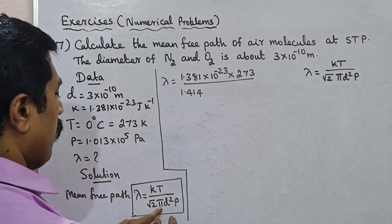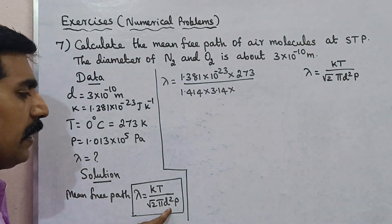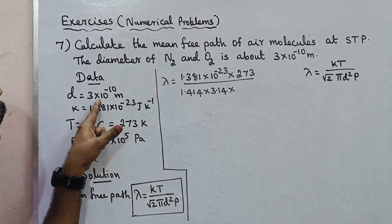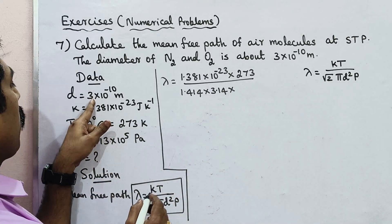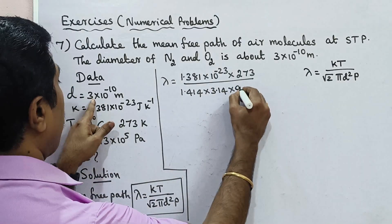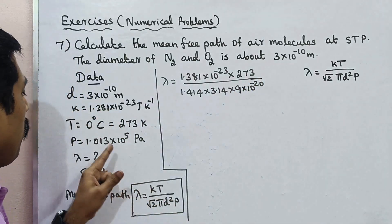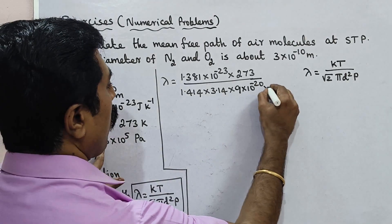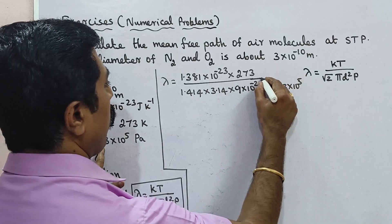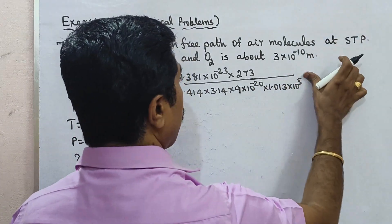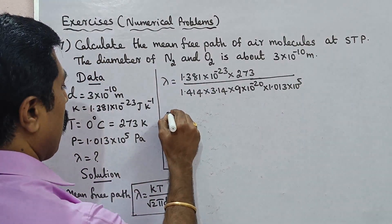Pi value is 22/7 (3.14), and D is 3 × 10⁻¹⁰ m, so D squared is 9 × 10⁻²⁰. The pressure at STP is 1.013 × 10⁵ Pa. These values are substituted into the denominator of the mean free path formula.